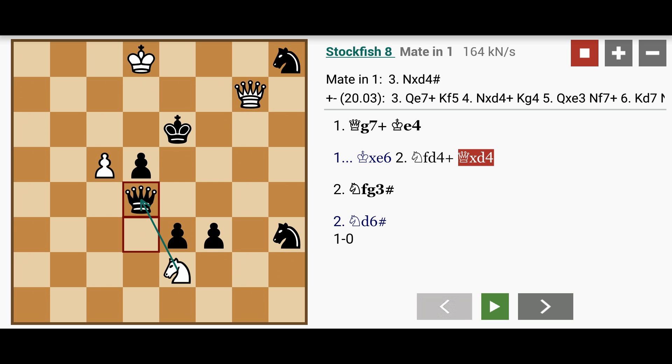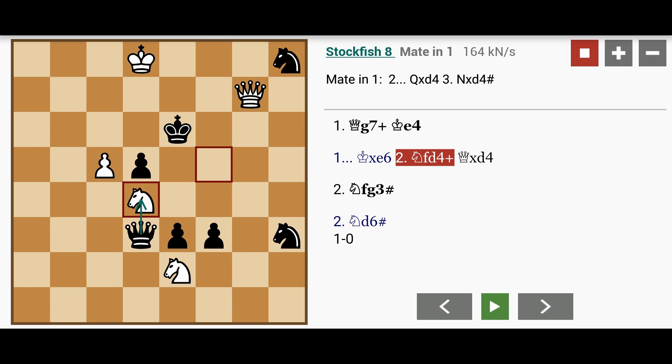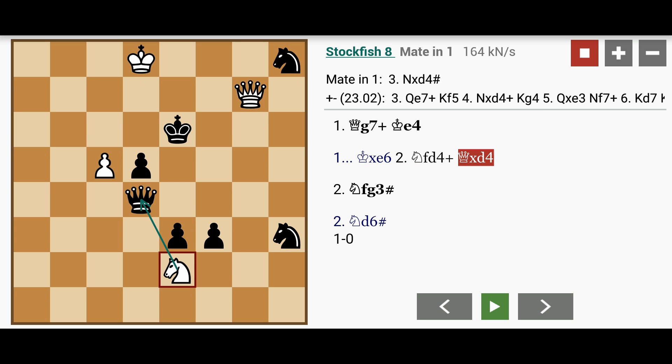Because as you can see, the black king has no legal square. So the queen captures. And here, white recaptures the queen with checkmate.